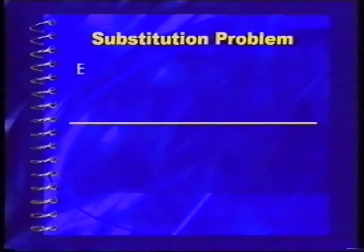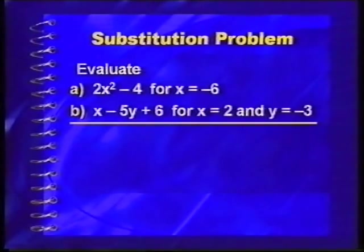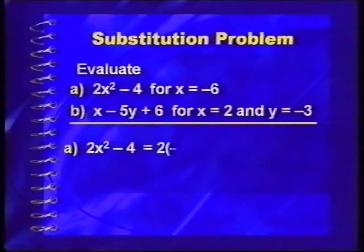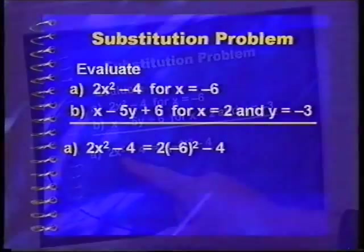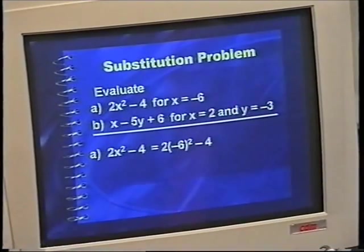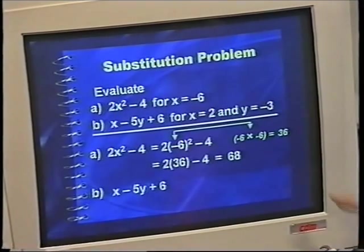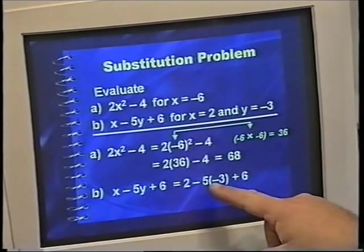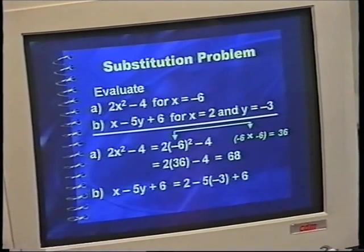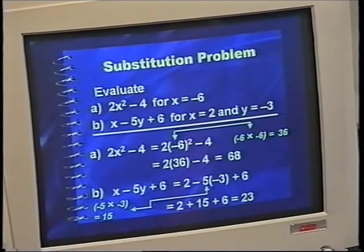Let's have a look at some problems — an easy one first and then a more difficult one. Evaluate two expressions. First, 2x squared minus 4 for x equals minus 6. We substitute minus 6 in for x, square it to get 36, so we get 2 times 36 minus 4, which equals 68. The next expression has x equal to 2 and y equal to negative 3. Substituting gives negative 5 times negative 3, which is positive 15, and 2 plus 15 plus 6 equals 23.